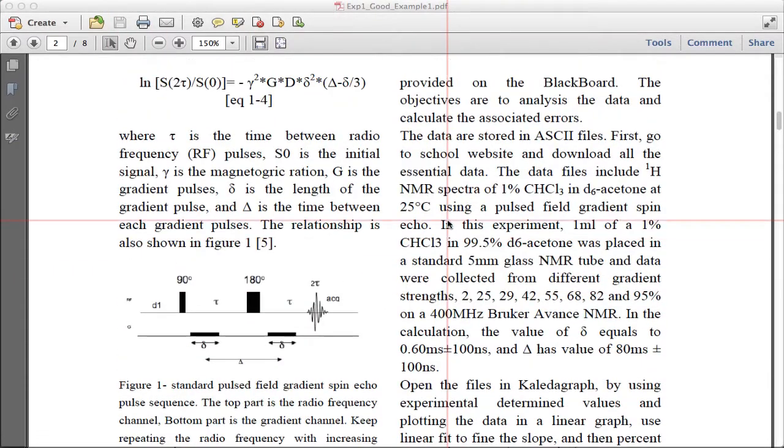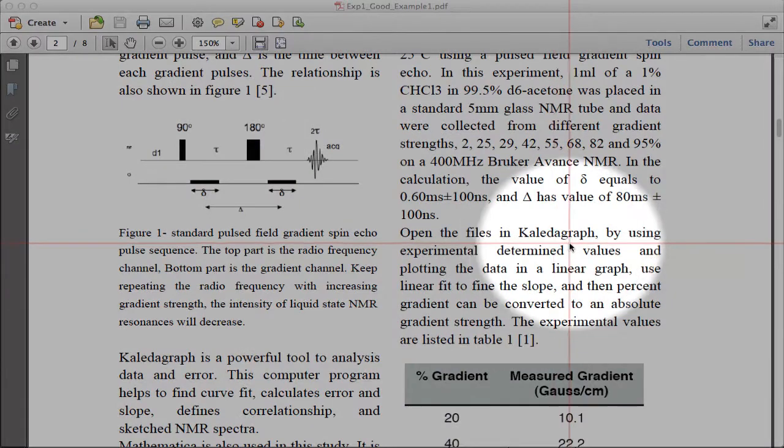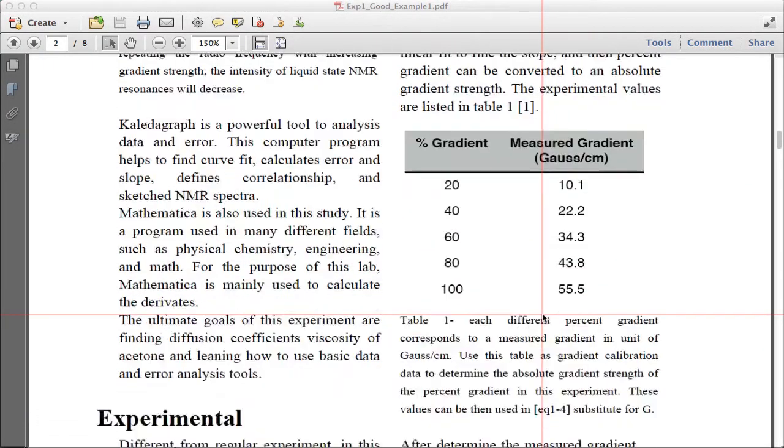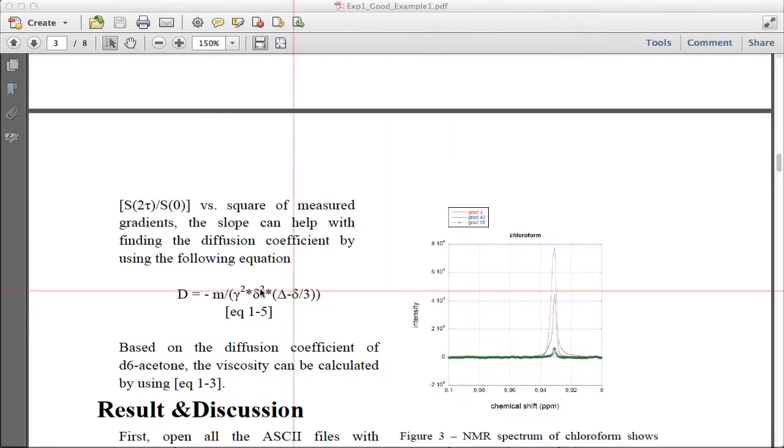But they provide where they got the data from, what the data is, what the sample is, KaleidoGraph, even though they don't give the version number, which they probably should, some of the background data that they were given, and some of the equation data that they were given.